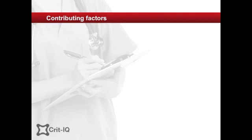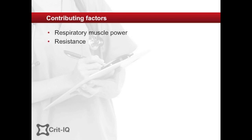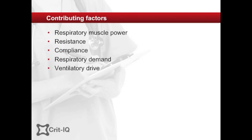A convenient checklist of contributing factors is presented here. Causes fall into seven key groups: respiratory muscle power, resistance issues, compliance issues, respiratory demand, decreased ventilatory drive, subclinical cardiac dysfunction, and sputum clearance.